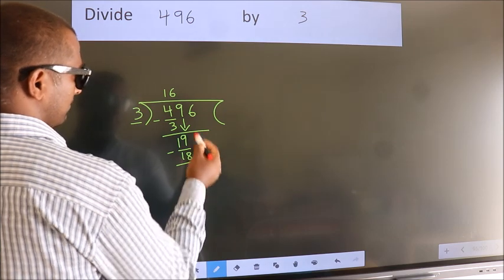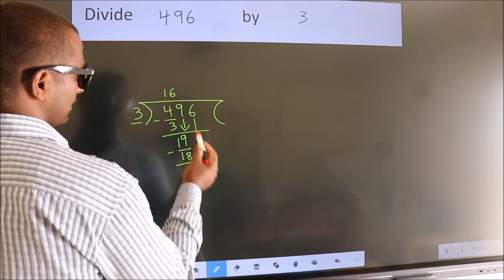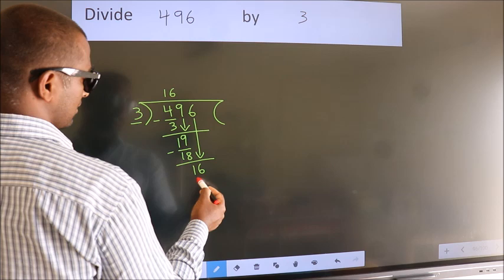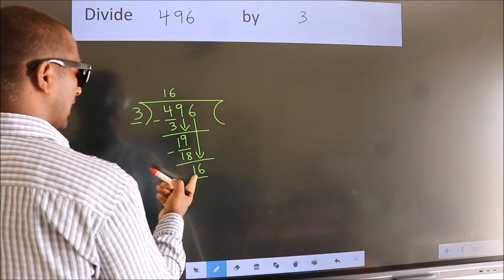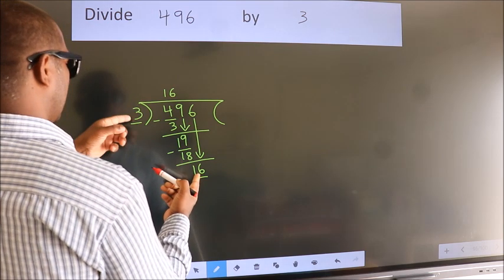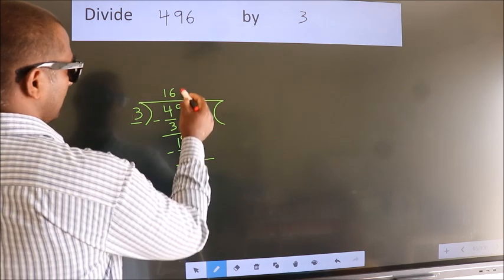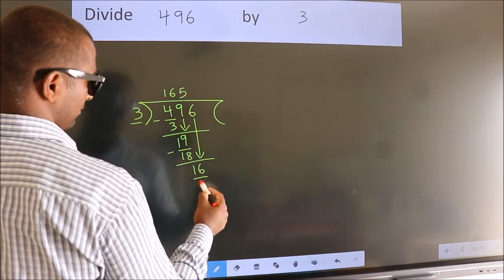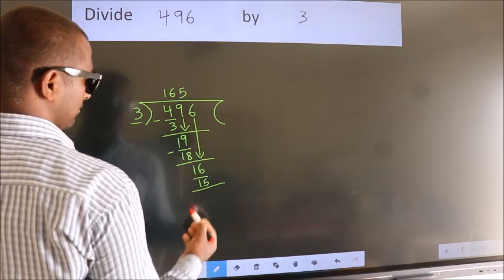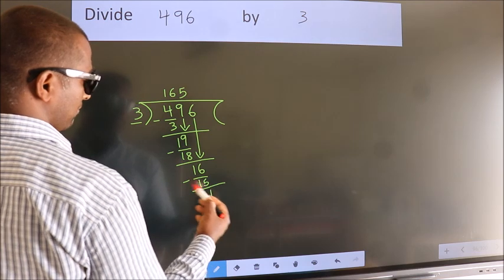After this, bring down the beside number. So 6 down. So 16. A number close to 16 in the 3 table is 3, 5, 15. Now we subtract. We get 1.